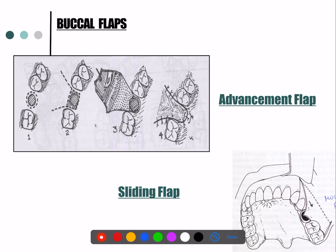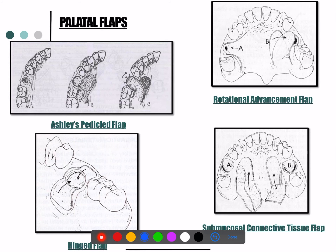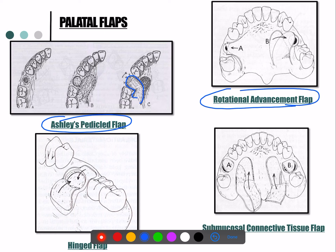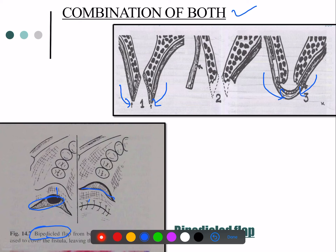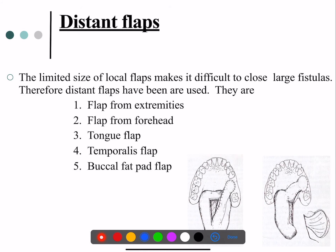For buccal flaps there is the sliding flap and the advancement flap. For palatal flaps, a palatal flap is reflected and extended; a rotational advancement palatal flap is taken, rotated, and advanced into the space; there is also a submucosal connective tissue flap and a hinge flap. A combination of buccal and palatal gives the bipedicle flap, where an incision is made at the communication, the flap is advanced, and an uncovered area is left for granulation tissue formation.